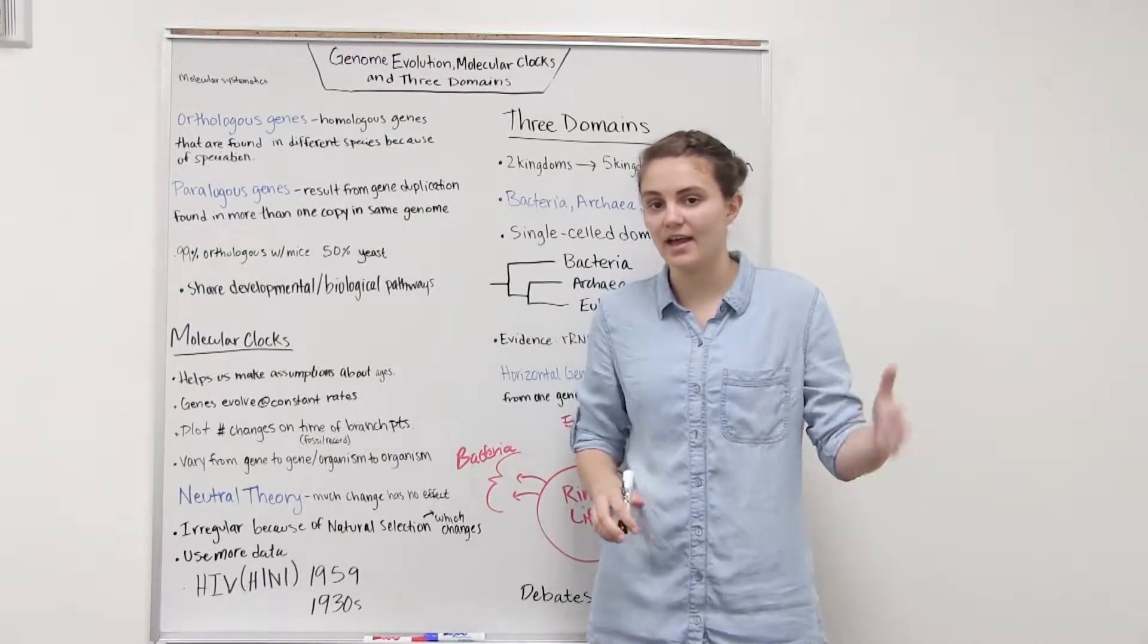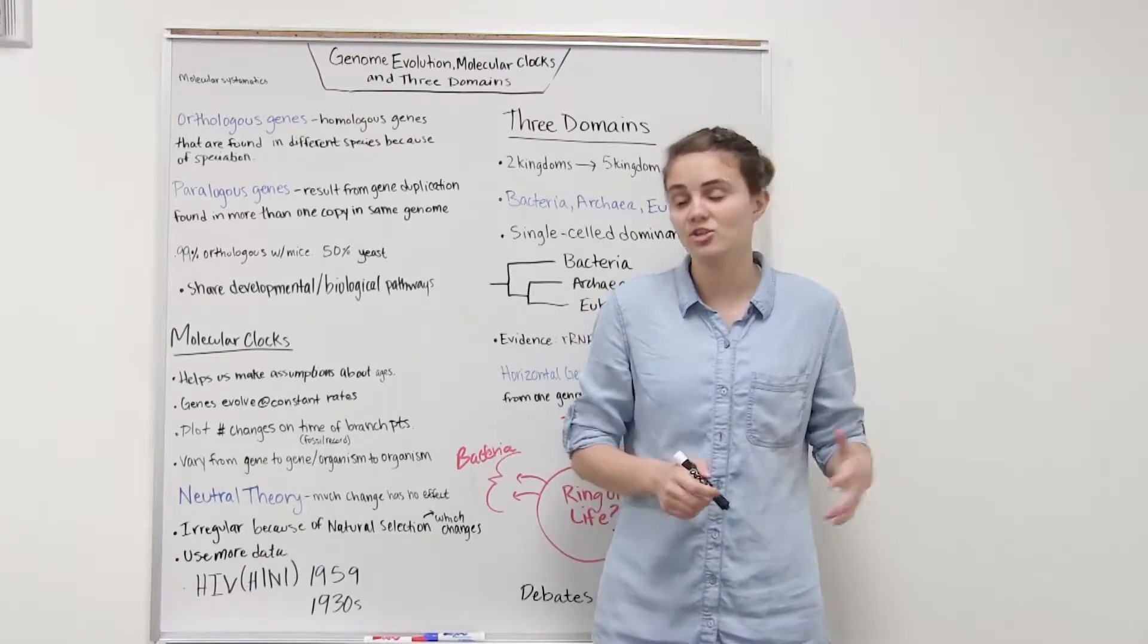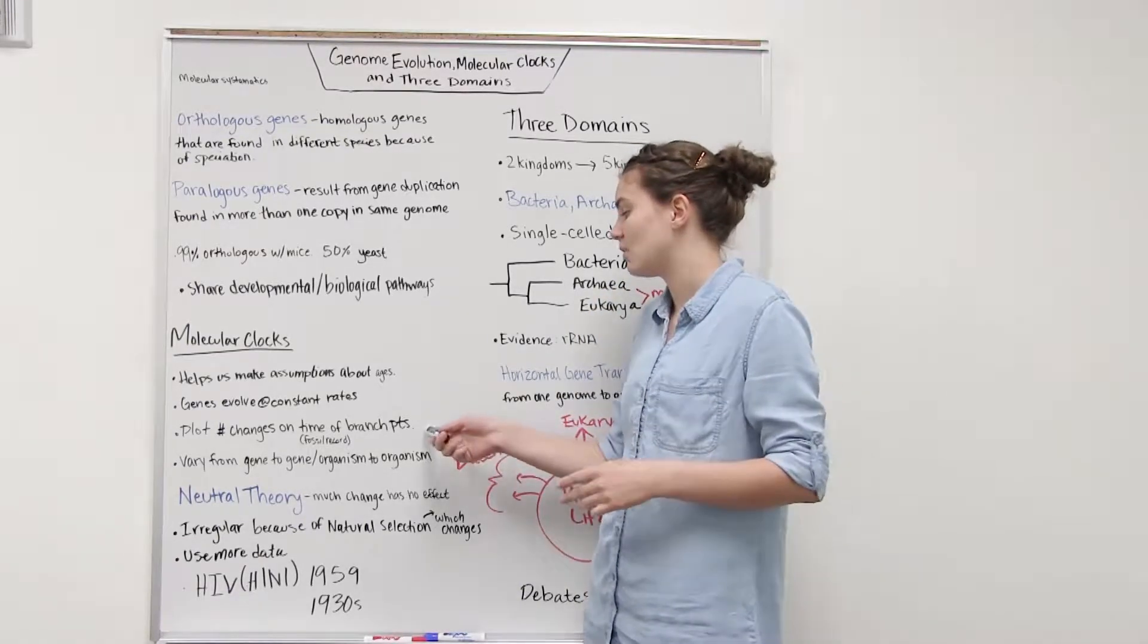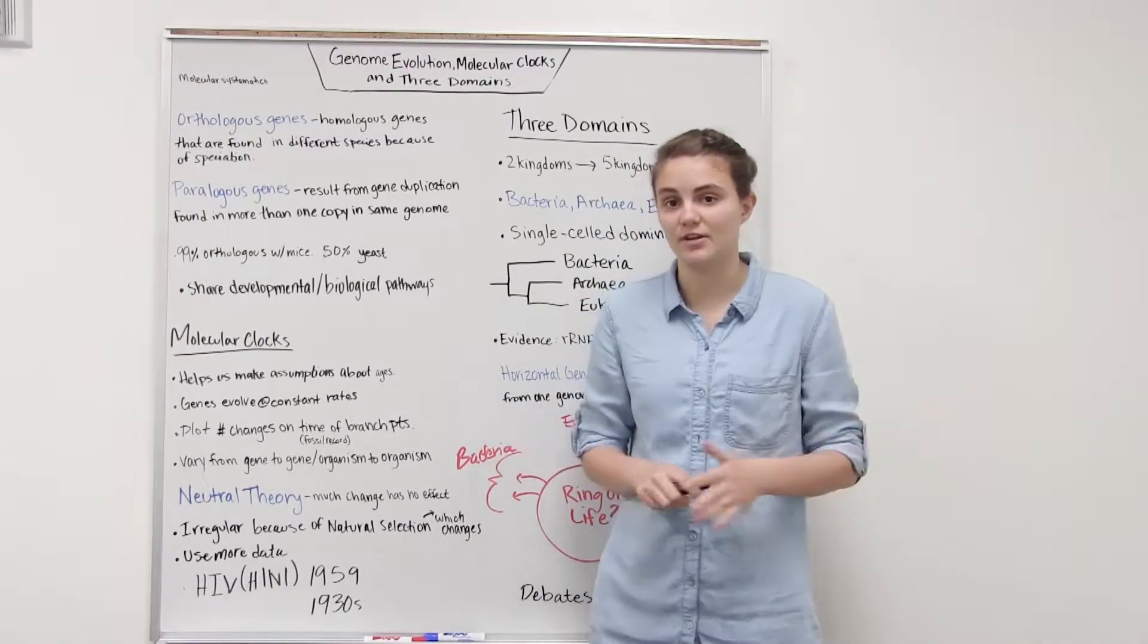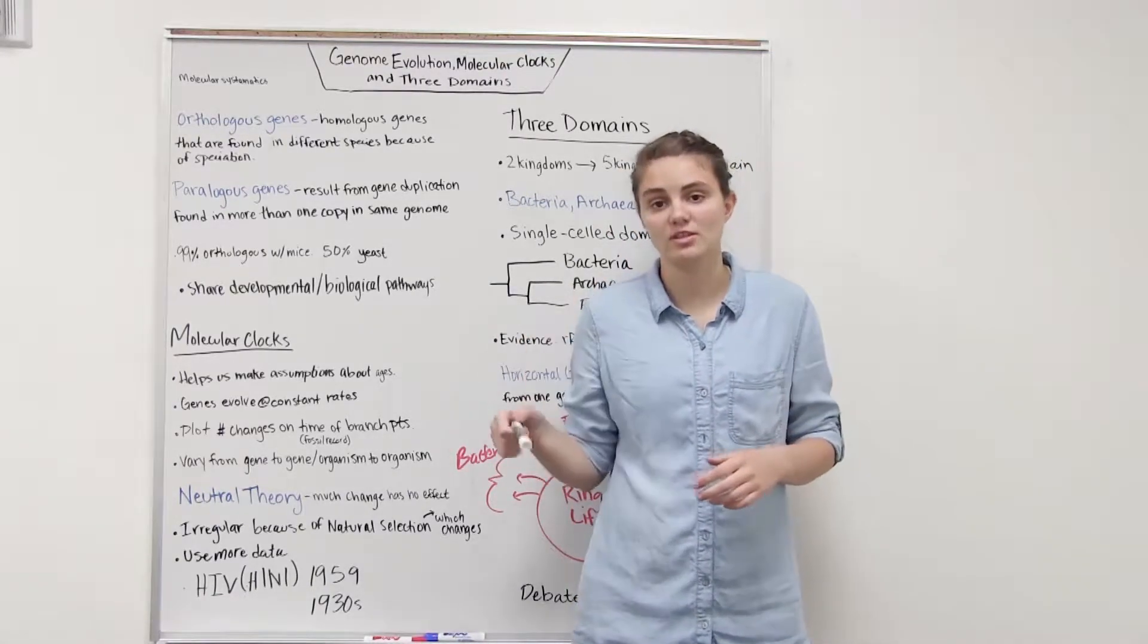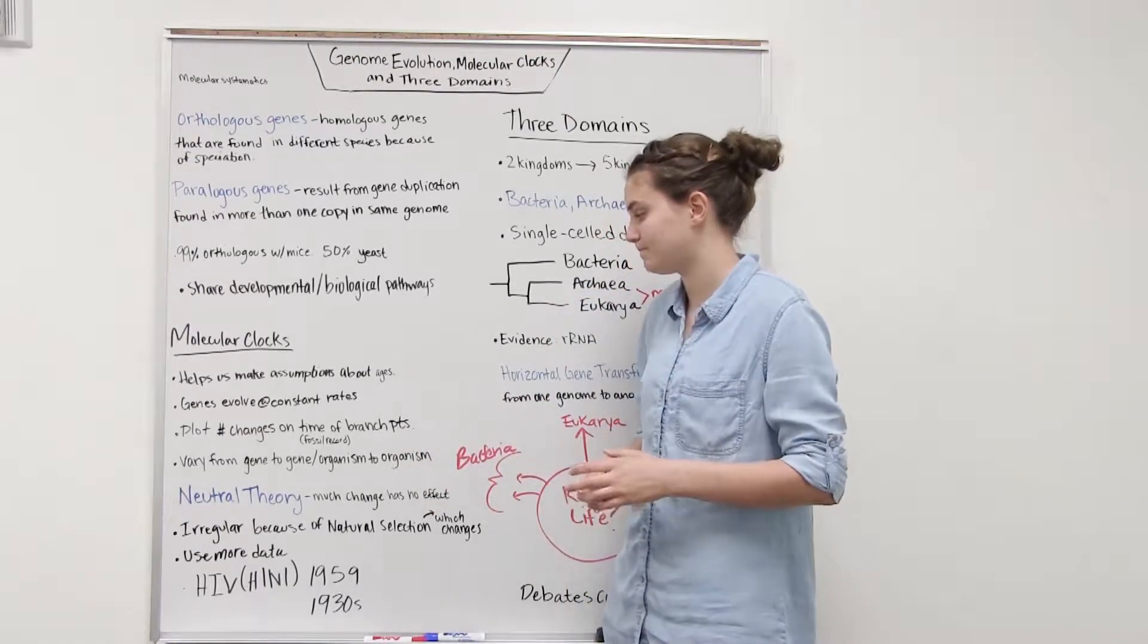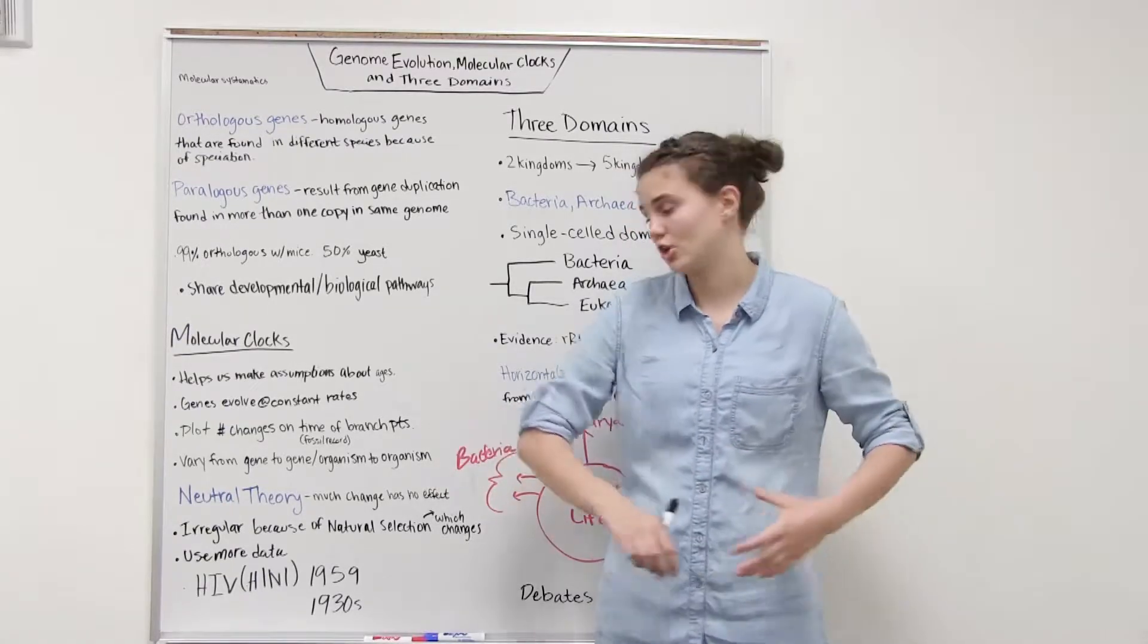What we're able to do is we're able to use this molecular data and a number of changes in a gene, and then we plot that over time in which we have these certain branch points in the fossil record when two species kind of emerged. Based on that we're able to say okay, here's how often we're going to be having these gene changes and here's how often we're probably going to be having these speciation events or some evolution occurring.